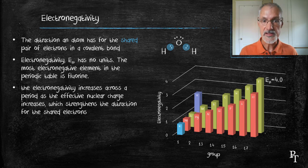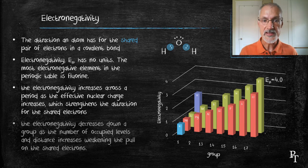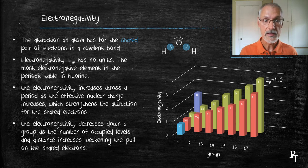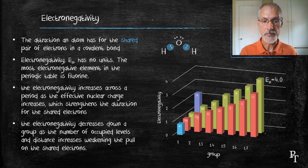Moving down a family due to increased energy levels, we see that the distance from the nucleus is increasing. This weakens the attraction for the shared pair of electrons.